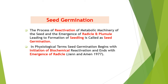Now let us see how seeds germinate. Seed germination is the process of reactivation of the metabolic machinery of the seed and the emergence of the radicle and plumule, leading to formation of a seedling. In physiological terms, seed germination begins with the initiation of biochemical reactivation and ends with the emergence of the radicle. When you place the seed in soil under favorable conditions — hydration and others — germination starts.